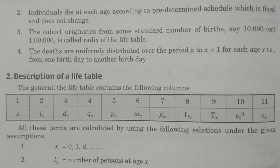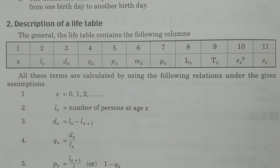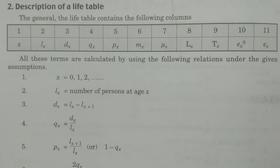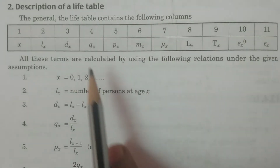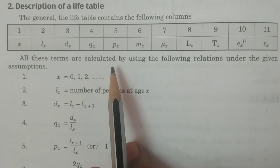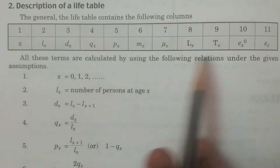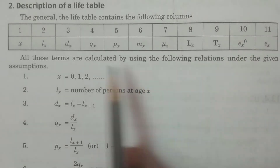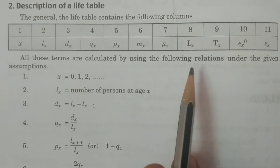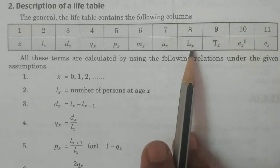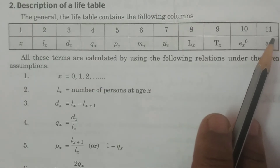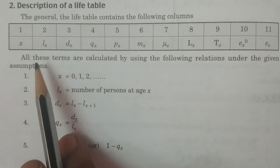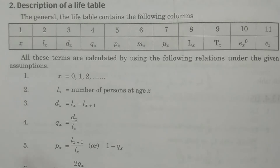The second part is description of a life table. This is a very crucial part. What are the terms we consider? In a life table — it is in the form of a table, as the name suggests — there are 11 columns specified here. Each and every column I will explain.